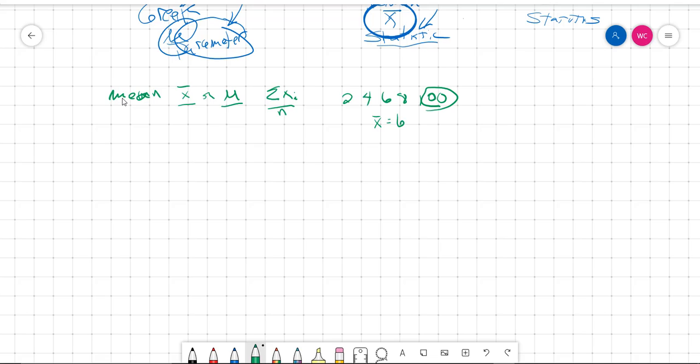We call this an outlier, and it's going to change the mean by a lot, right? If we take 2 plus 4 plus 6 plus 8, so that's 6, 12, 20, and then plus 100 equals 120, and if we take 120 divided by 5, we get a much different number than 6. In fact, we get 24.